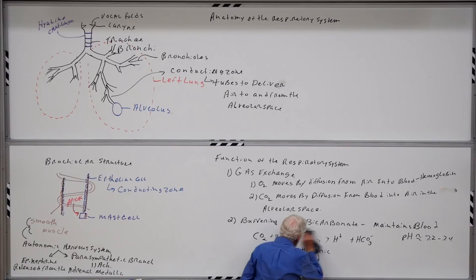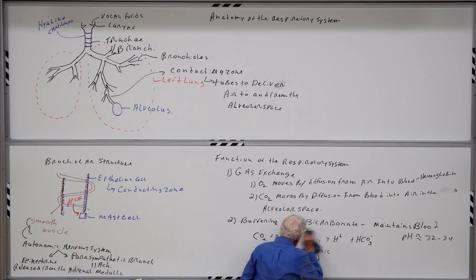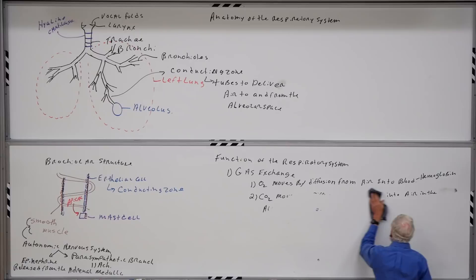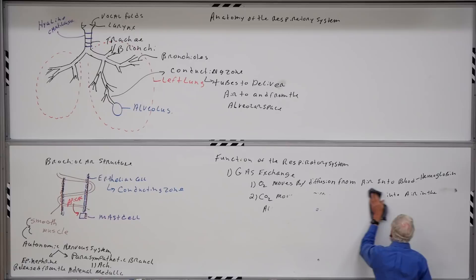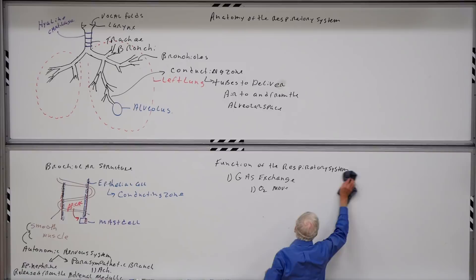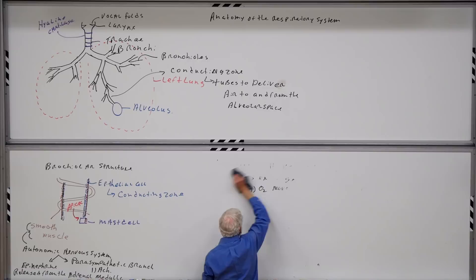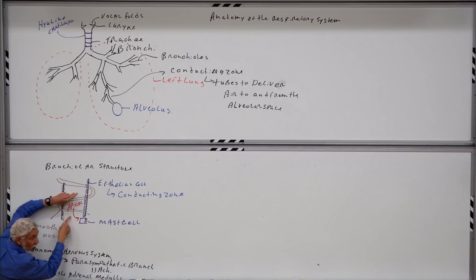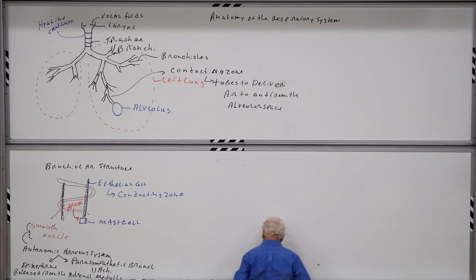Now let's think about what's going on with the mast cells. I'm going to talk about mast cells in terms of a pathology — though in a more regulated and less extreme fashion this is probably going on all the time. What I want to discuss is the response of the mast cells that produces an asthmatic attack. Anyone who's had an asthmatic incident knows it's really difficult to breathe in and out — and we'll see that revolves around changing the diameter of these bronchioles.